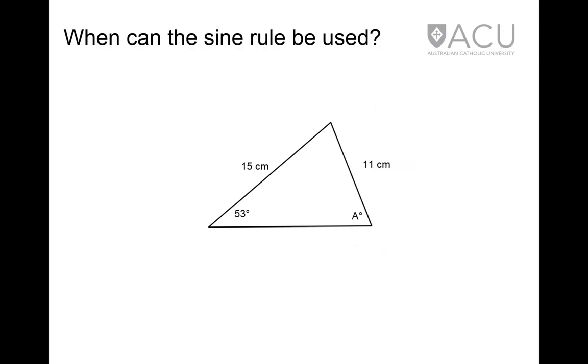In this triangle, there are two sides and their opposite angles, one of which is to be calculated. The sine rule can be used to find the magnitude of angle A.